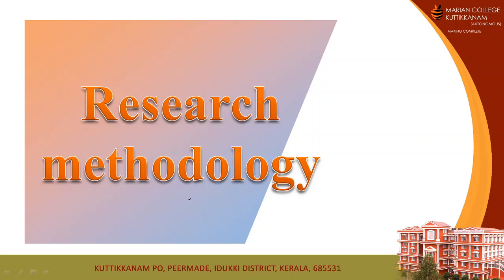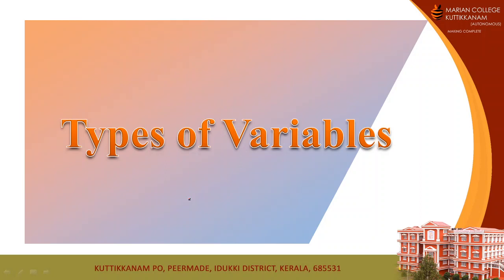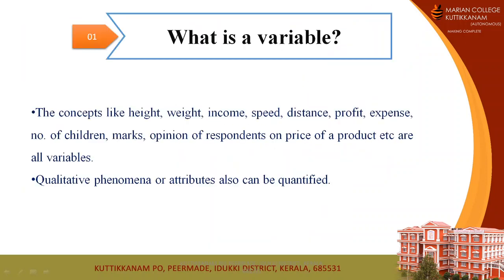Dear learners, welcome back to another video on research methodology. In this video we will be covering an important topic: variables. From the word itself, variable means something that varies. In other words, it is a measure that can change from observation to observation, or variables are properties, characteristics, or attributes of some event, object, or person that can take different values or amounts. Some examples of variables are height, weight, marks, opinion, and perception of people.